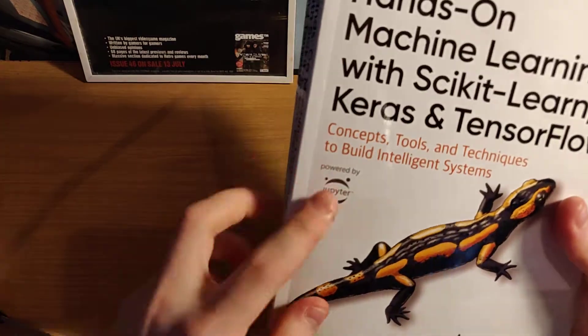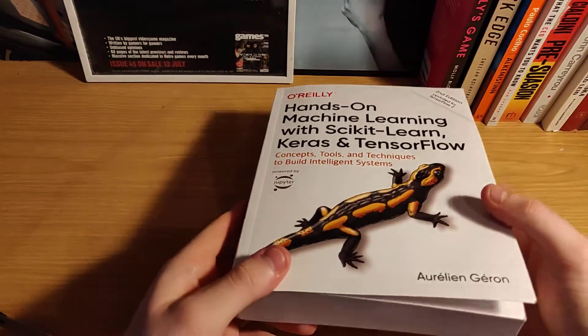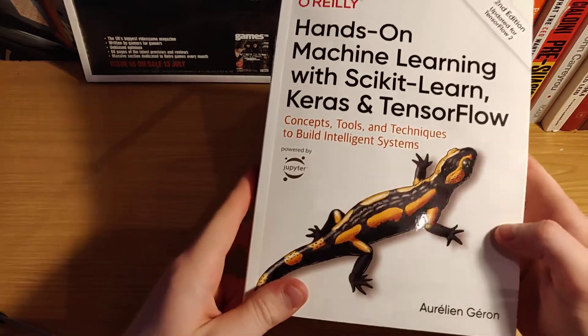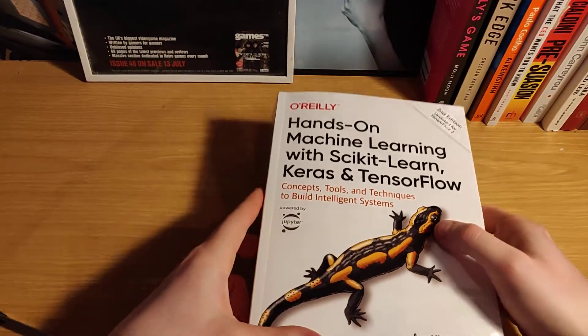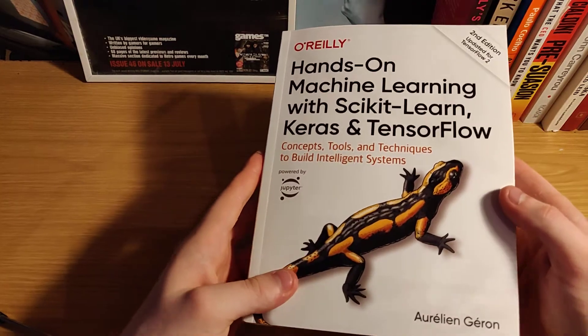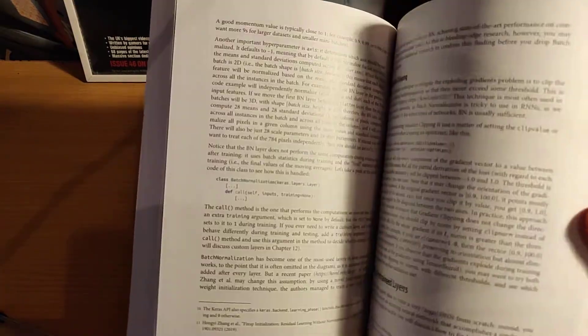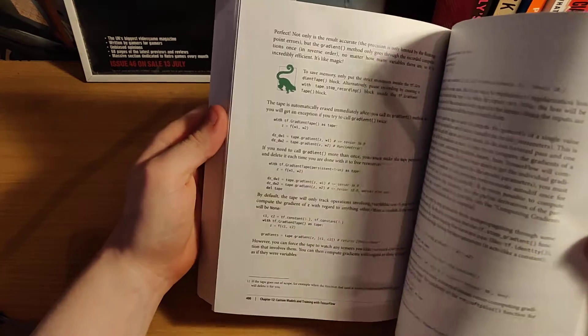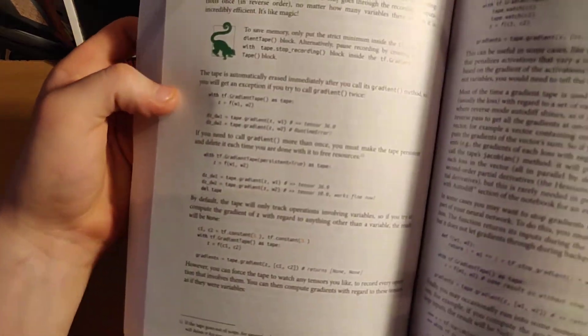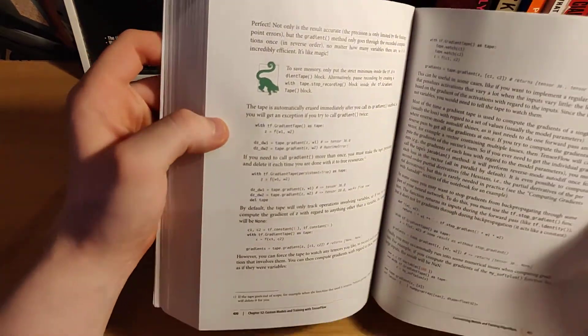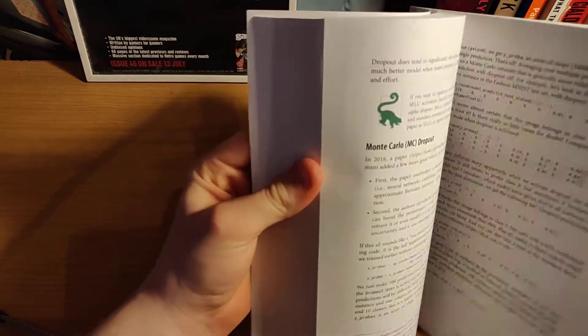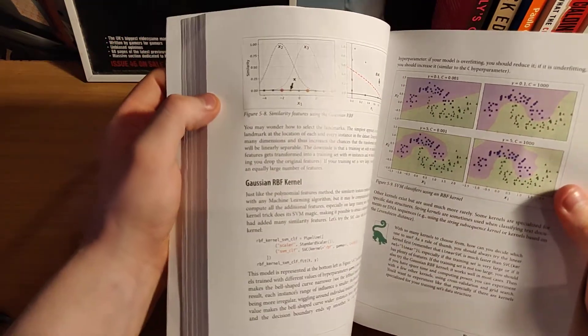This book is based on Jupyter Notebook so all the code in this book will be available on GitHub so you don't have to actually write the code yourself. You can see he has a lot of Python code in this book, but you don't have to actually write it yourself. You can just find it on GitHub and it's pretty well organized so each chapter is easy to find.